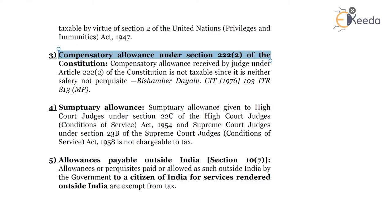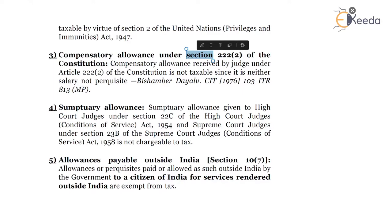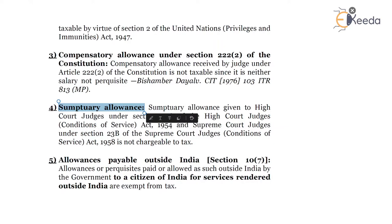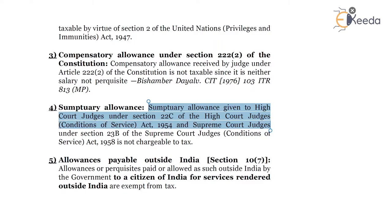Compensatory allowance received by a judge under Article 222 of the Constitution is not taxable since it is neither salary nor perquisite, as per the decision in CIT versus CIT. Sumptuary allowance — which is nothing but personal expenditure allowance — paid to judges: sumptuary allowance given to High Court judges under section 22C of the High Court Judges Act 1954 and to Supreme Court judges under section 23B of the Supreme Court Judges Act 1958 is not chargeable to tax.